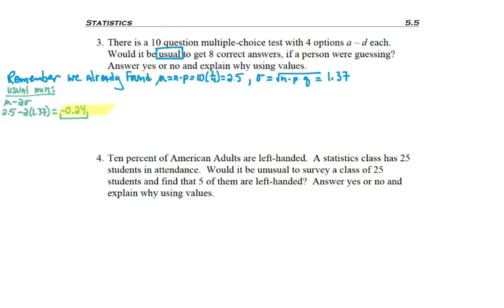Remember, sometimes we get wacky numbers - like how can you get negative answers on a test? But we keep them as we see them. The usual maximum is μ plus 2σ, so 2.5 plus 2 times 1.37 gives us 5.24. Again, I can't get 5.24 questions right, but the usual maximum is limited at that point.